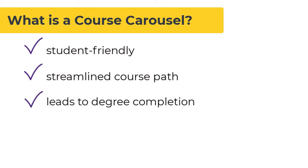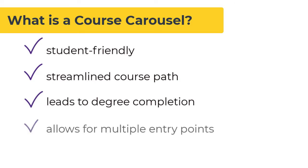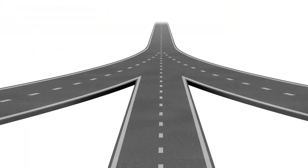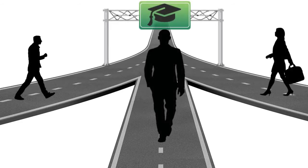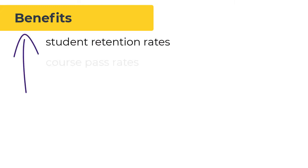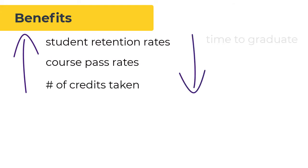The concept of carouseling allows multiple entry points on this path, so students starting in different terms or transferring can be enrolled in the same courses while still earning credit. When a course carousel is well-designed, students can get on the carousel at any term to take courses that earn credit towards their degree, and they only get off the carousel when they graduate. A more regularized course schedule like this can boost student retention rates, improve course pass rates, increase the number of credits students take, and reduce the time to graduation.